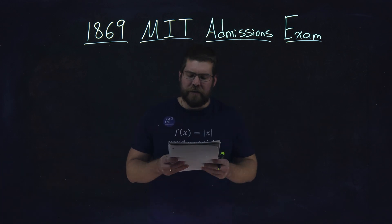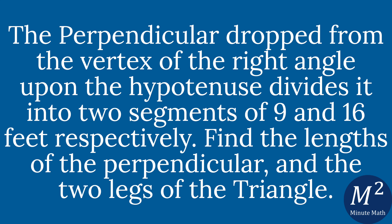The question is: the perpendicular dropped from the vertex of the right angle upon the hypotenuse divides it into two segments of 9 and 16 feet, respectively. Find the lengths of the perpendicular and the two legs of the triangle.